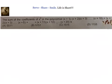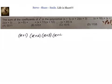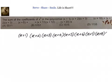The first term of the polynomial is x plus 1 multiplied with x plus 2, multiplied with x plus 3, multiplied with x plus 4, multiplied with x plus 5, multiplied with x plus 6, multiplied with x plus 7, multiplied with x plus 8, multiplied with x plus 9, and multiplied with x plus 10. This is the first term of the polynomial.